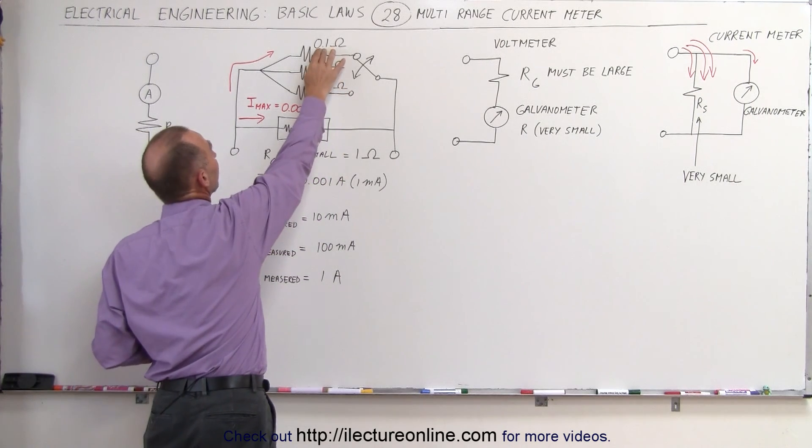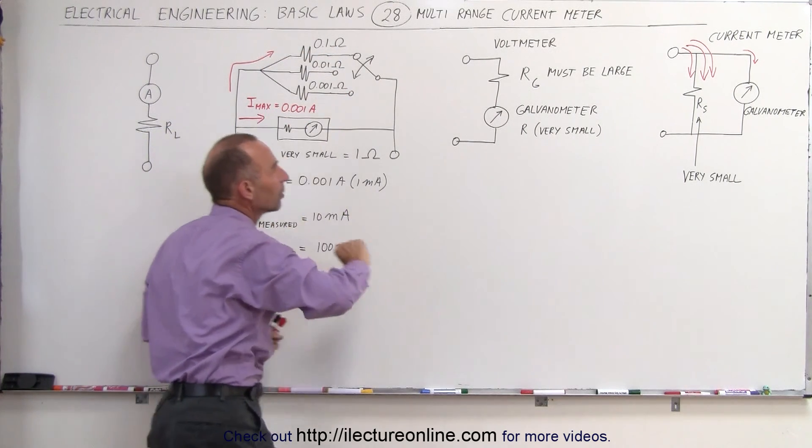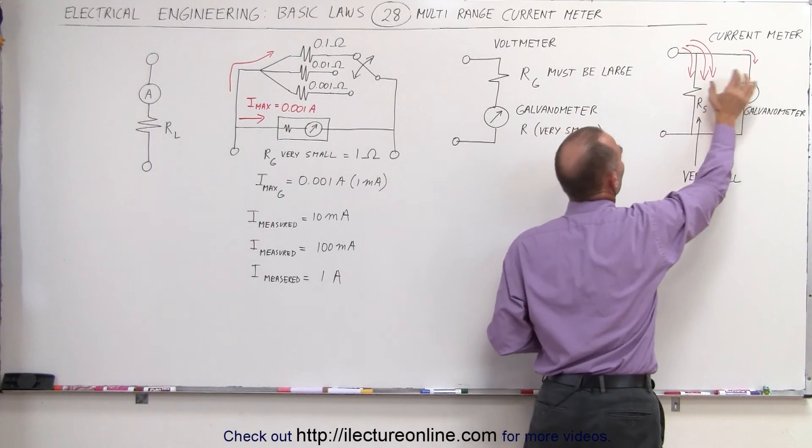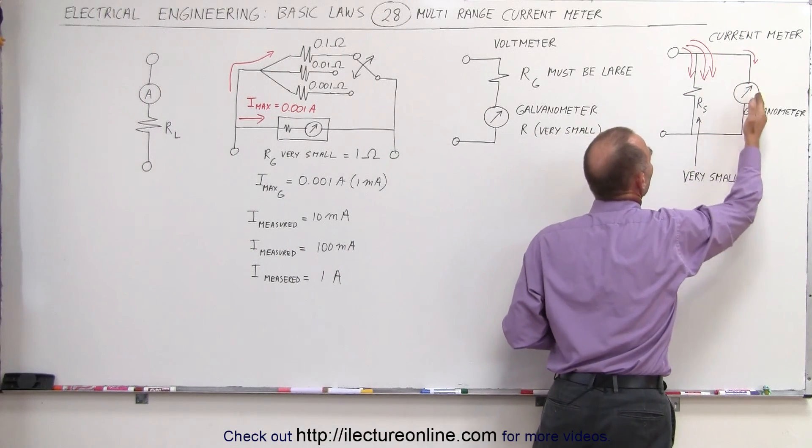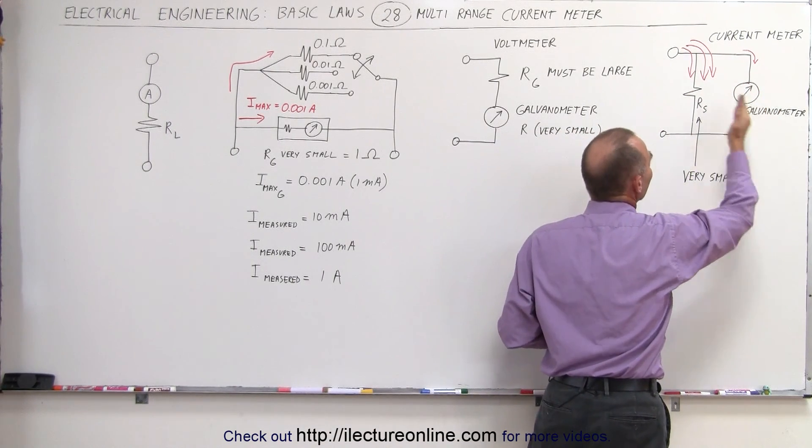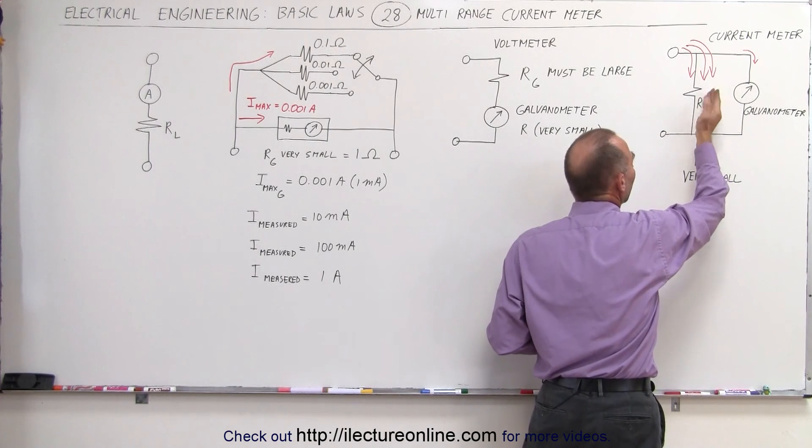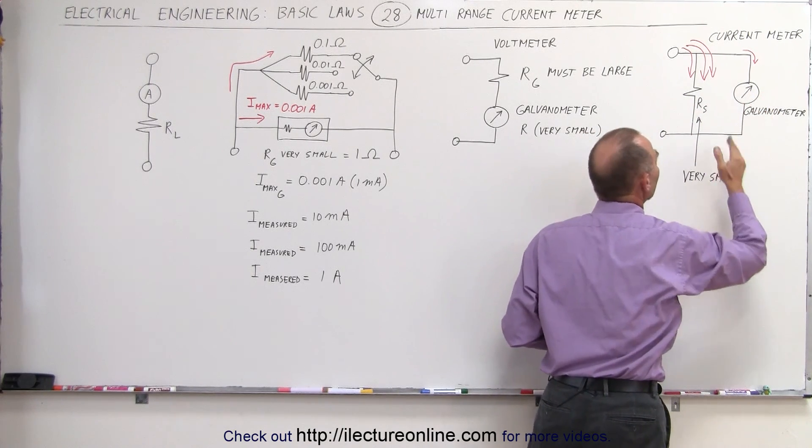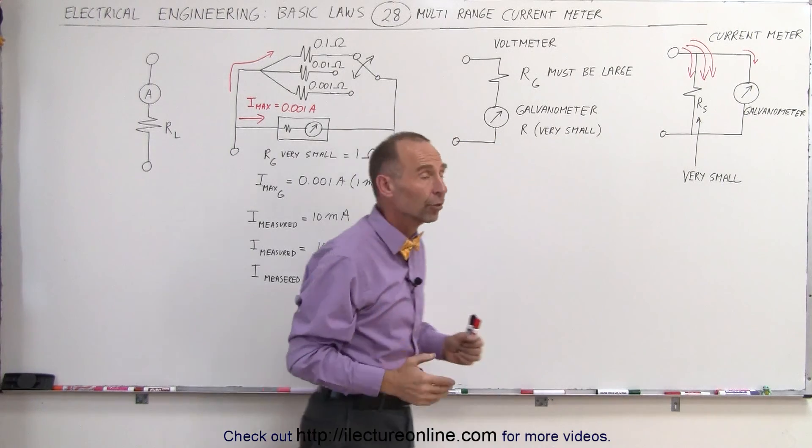Well, when we place a resistor in parallel that is smaller, it will get most of the current, so that only a small current will go through the galvanometer. If the resistor here is about one-tenth the size of the resistor of the galvanometer, it will carry about ten times the current.